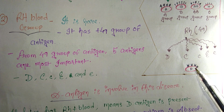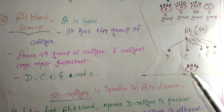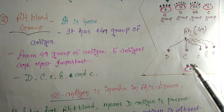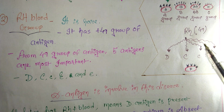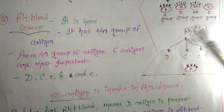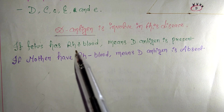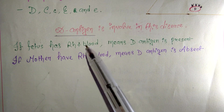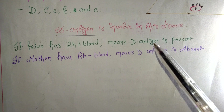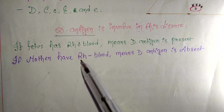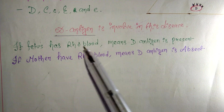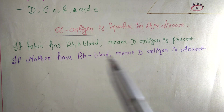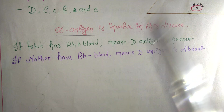If we examine the blood and find the D antigen on the surface of the RBC, that person has RH positive blood group. If the fetus has RH positive blood — meaning D antigen is present (typically inherited from the father) — and the mother is RH negative — meaning D antigen is absent — then this condition of RH incompatibility occurs.